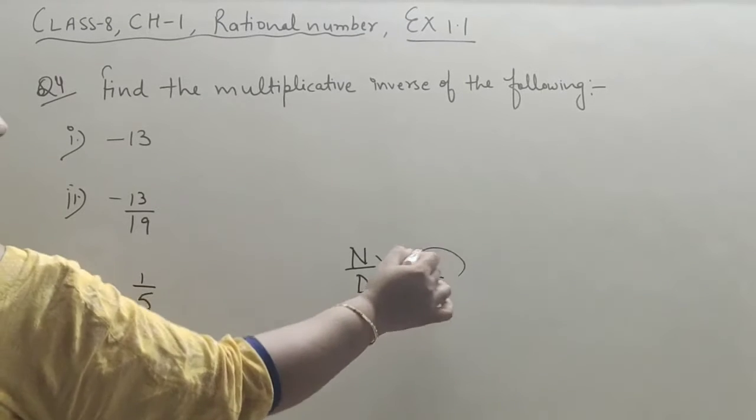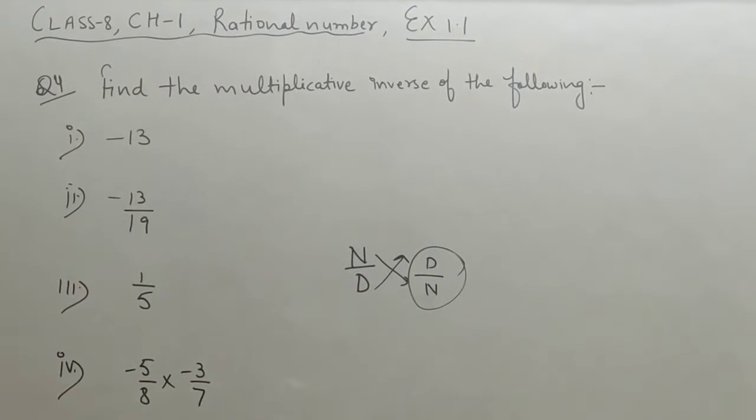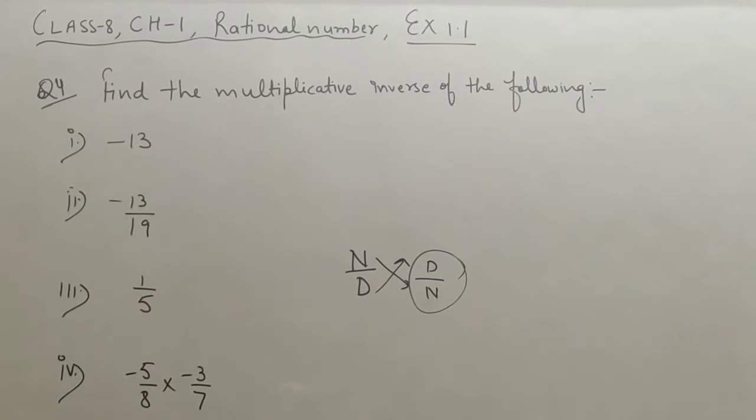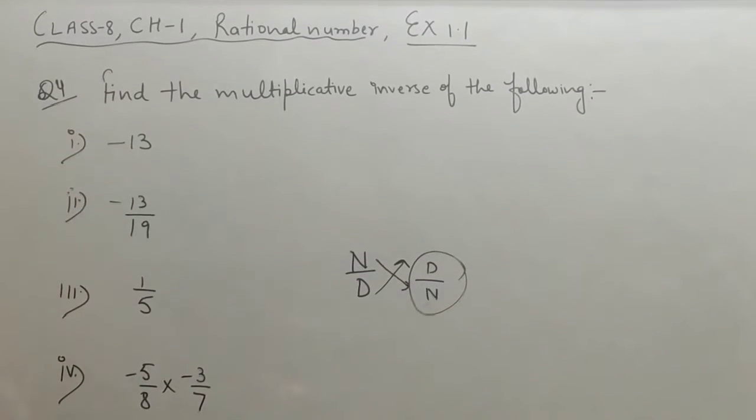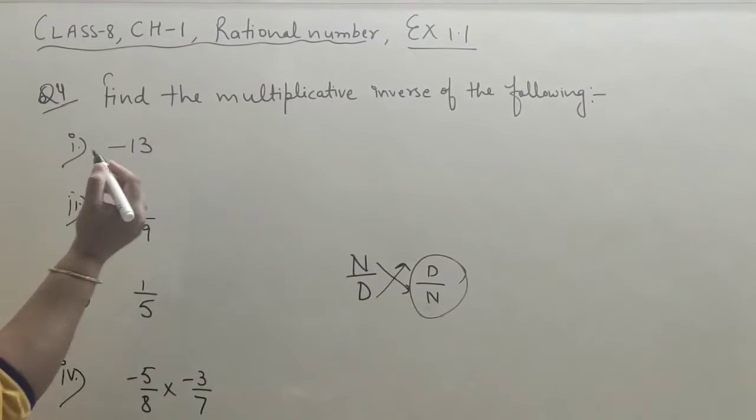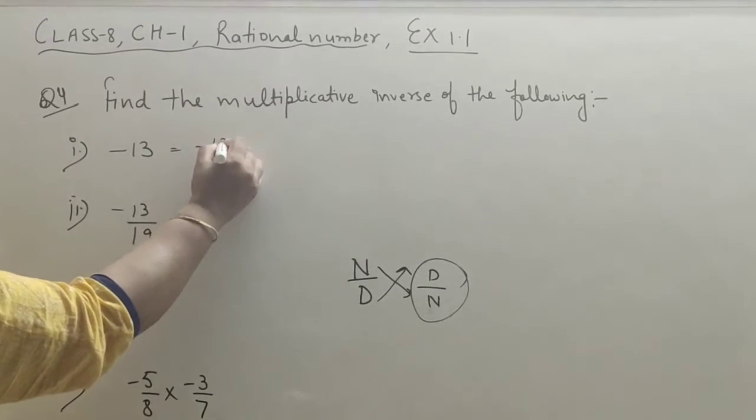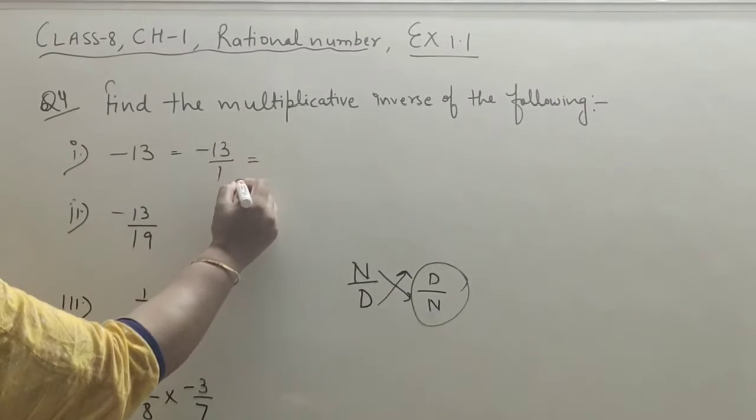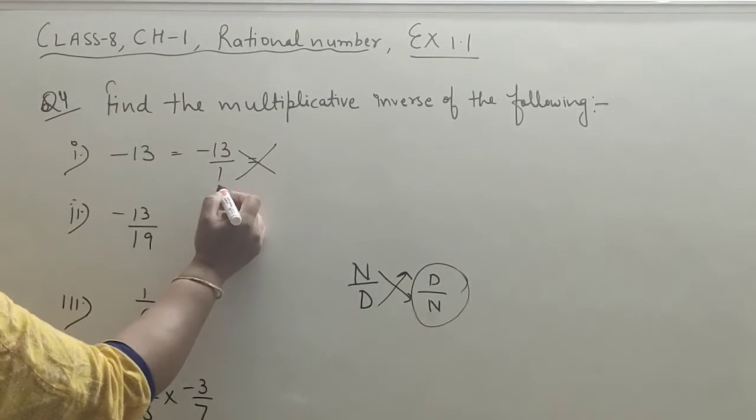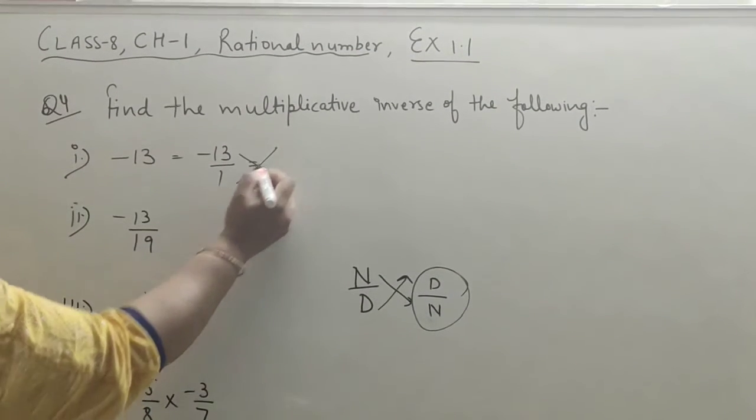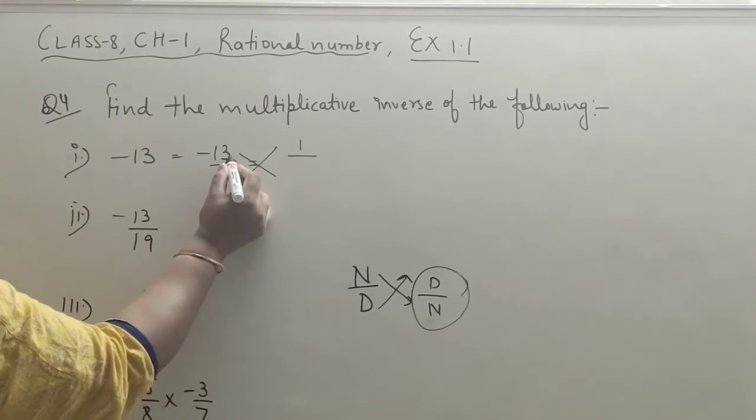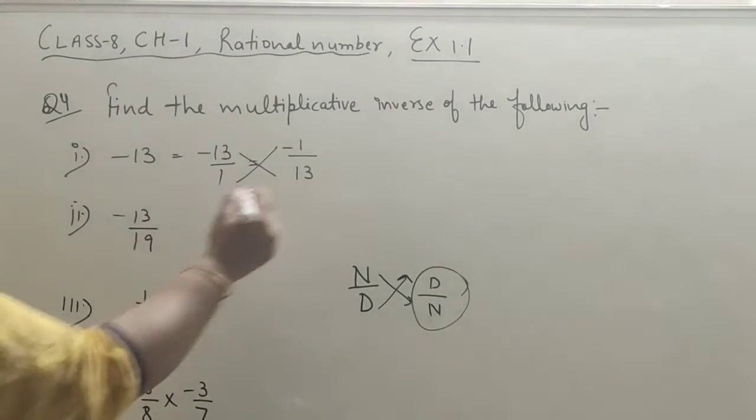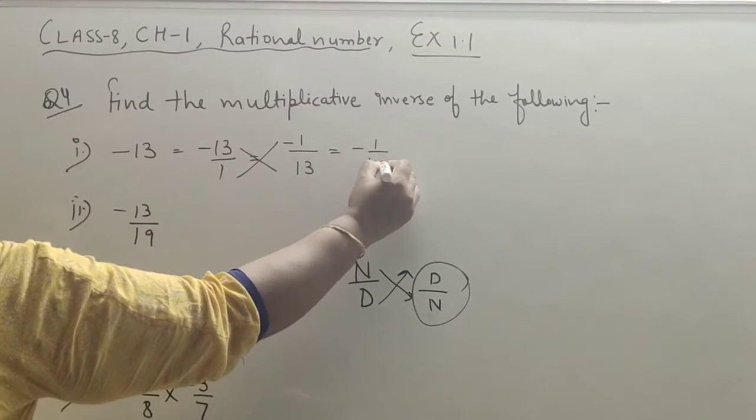The sign will remain same. Let's explain the first example: minus 13. We can write it as minus 13 upon 1. We have to change denominator as numerator and numerator as denominator, and sign will remain same. So the answer is minus 1 upon 13.